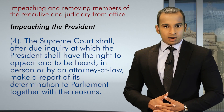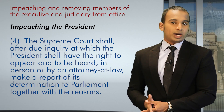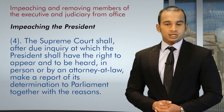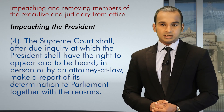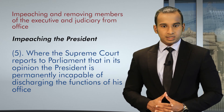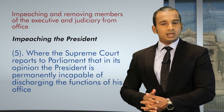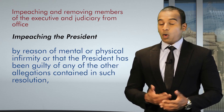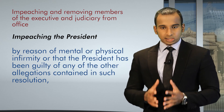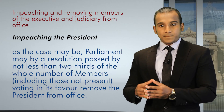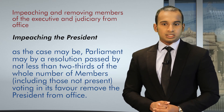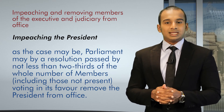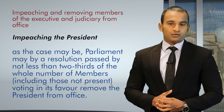The Supreme Court shall, after due inquiry at which the President shall have the right to appear and to be heard in person or by an attorney at law, make a report of its determination to Parliament together with reasons. Where the Supreme Court reports to Parliament that in its opinion the President is permanently incapable of discharging the functions of his office by reason of mental or physical infirmity, or that the President has been guilty of any other allegations contained in such resolution, Parliament may by a resolution passed by not less than two-thirds of the whole number of members, including those not present, voting in its favour, remove the President from office.